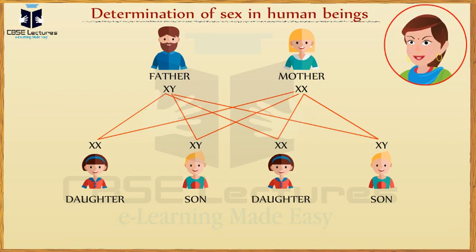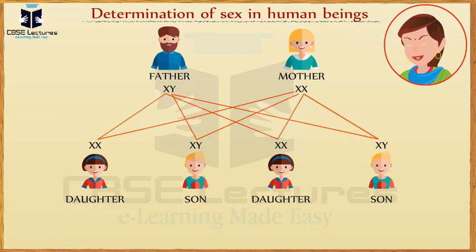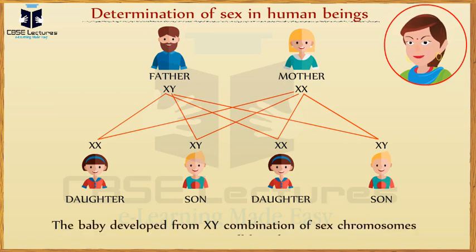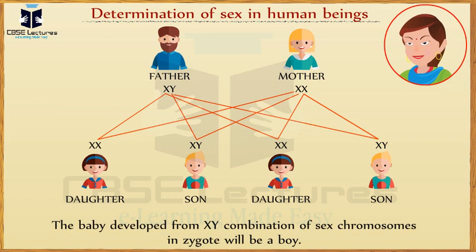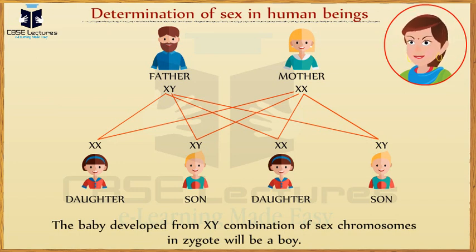On the other hand, an egg always has an X chromosome as the 23rd chromosome. A baby developed from an XX combination of sex chromosomes in the zygote is a girl, and a baby developed from an XY combination of sex chromosomes in the zygote will be a boy. This also proves that the father is responsible for the sex of the baby which is born.